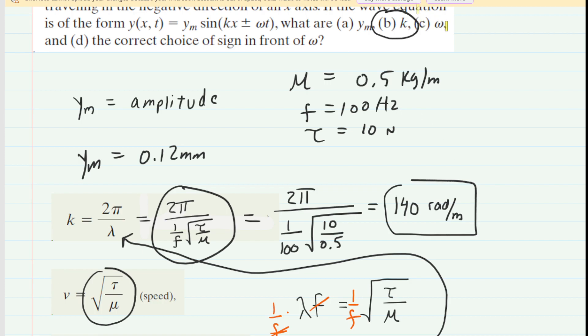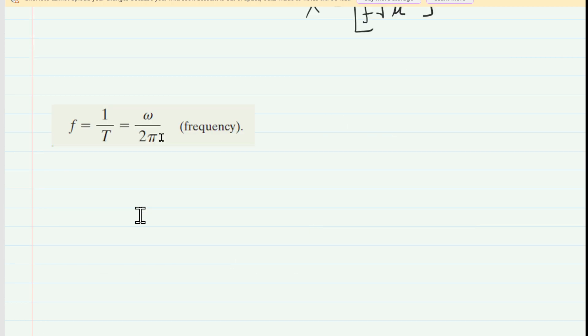We can look next at part C, which is asking us for ω, also known as the angular frequency. And we can rather easily calculate the angular frequency because we know that frequency is equal to ω divided by 2π.